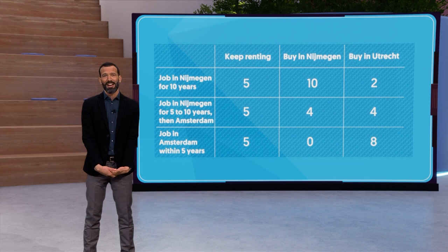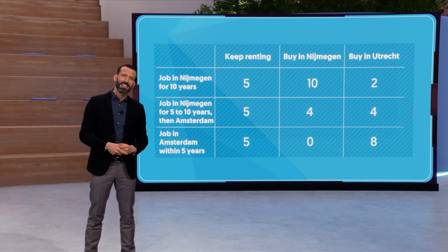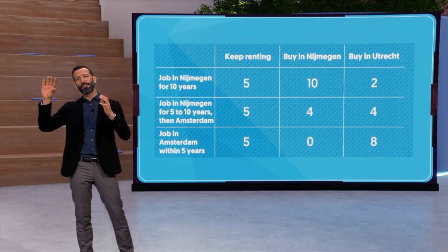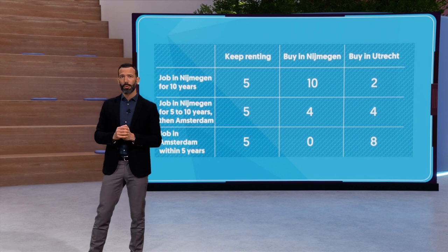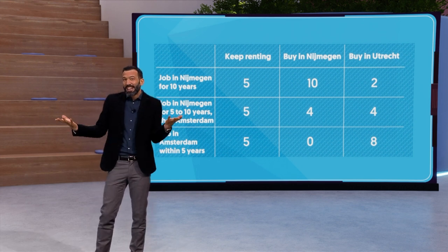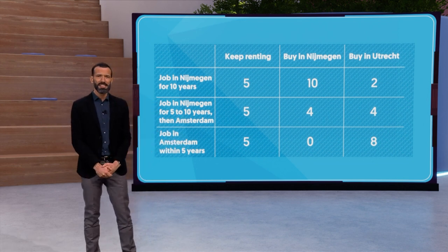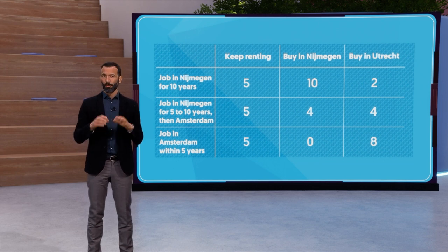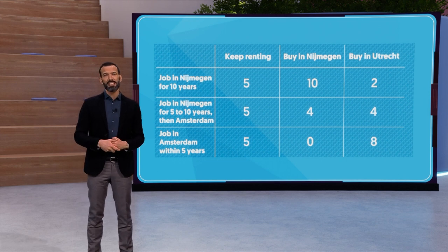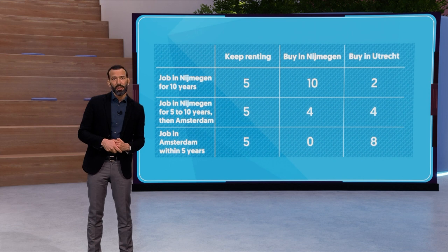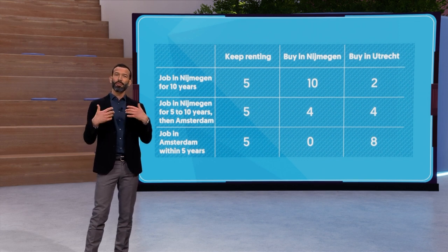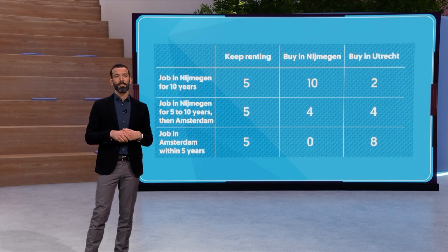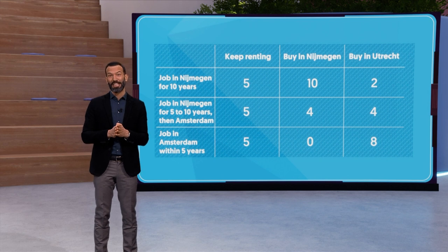People typically make two mistakes at this stage. The first is to compare columns for each row — the first row favours buying in Neumachen, the second row favours the status quo, and the third row favours buying in Utrecht, so you just hesitate and don't know how to choose. The second mistake is to focus on the worst case for each action. The worst case of buying in Utrecht is a score of 2, for buying in Neumachen it is a score of 0, and the worst case of keeping renting is a score of 5. My advice: never focus on the worst case, or you will end up doing nothing — and worse, you will be violating our four key principles.